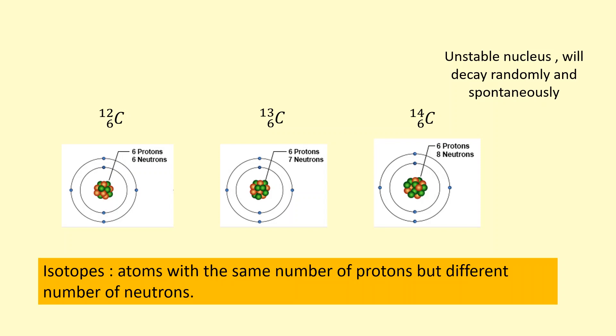What do I mean by randomly and spontaneously? It means we can't predict when it's going to decay, and we can't influence the decay by increasing temperature or pressure like in a chemical reaction. It's just completely random and can't be influenced.